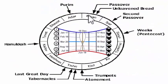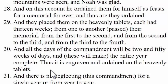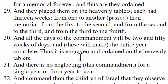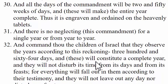There are actually 13 exact weeks between these feast days or these days of remembrance — this is how the sacred calendar works. Verse 30 says, 'And all the days of the commandment will be 52 weeks of days, and these will make the entire year complete. Thus, it is engraved and ordained on the heavenly tablets.' So the sacred calendar has 52 weeks of days — this is how the sacred calendar has 364 days in it.